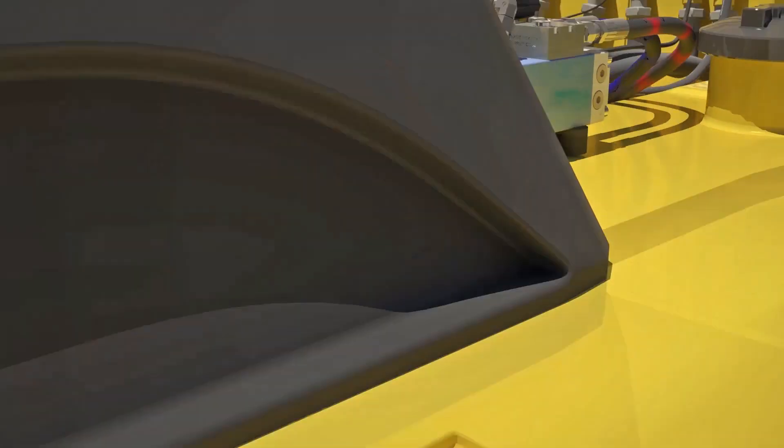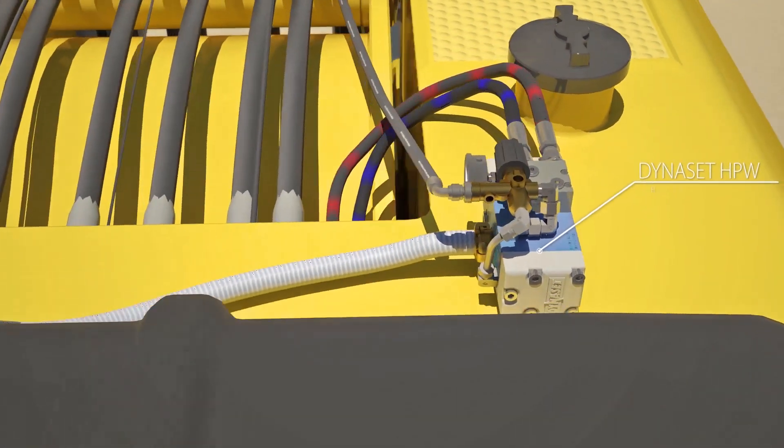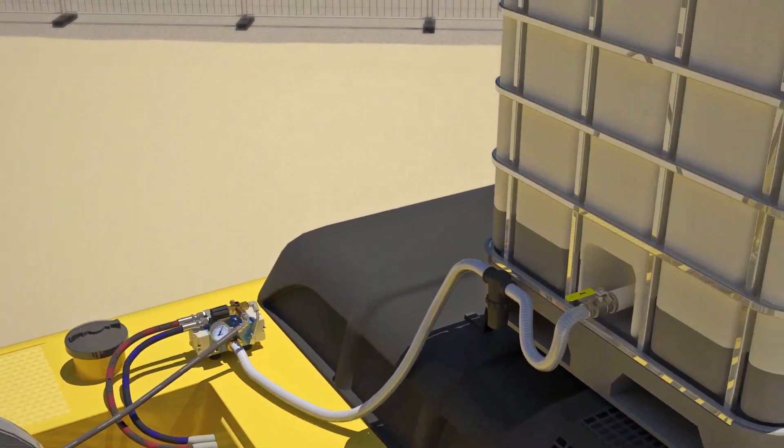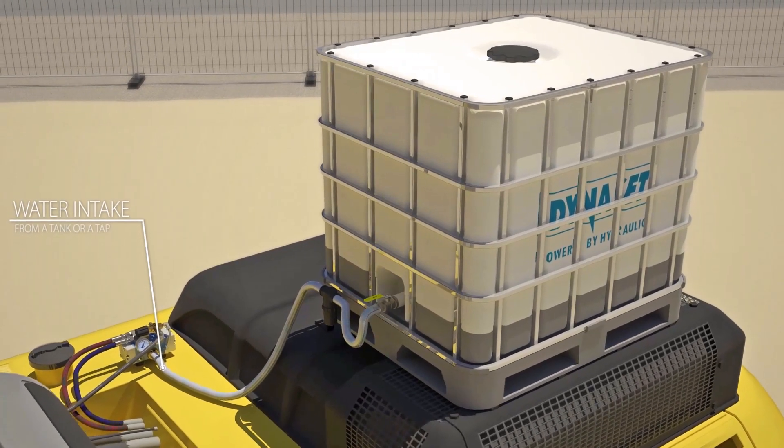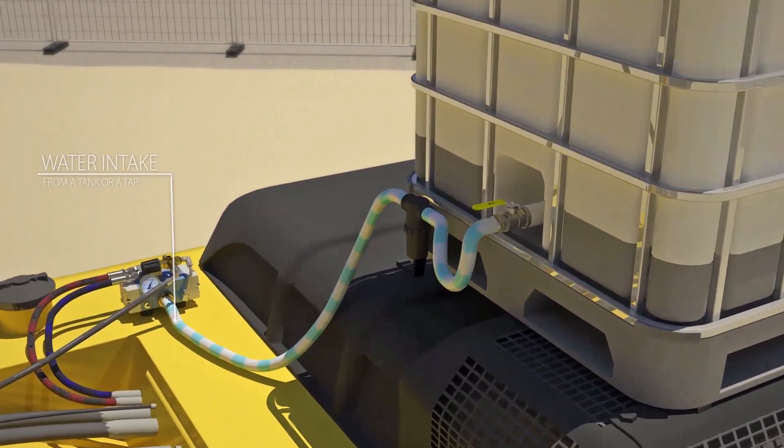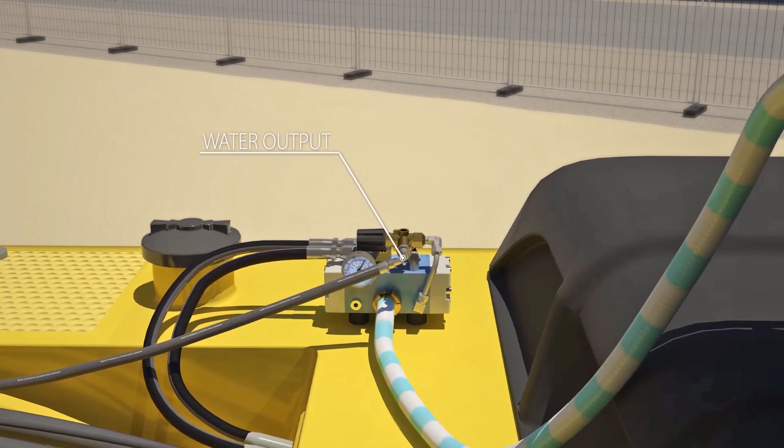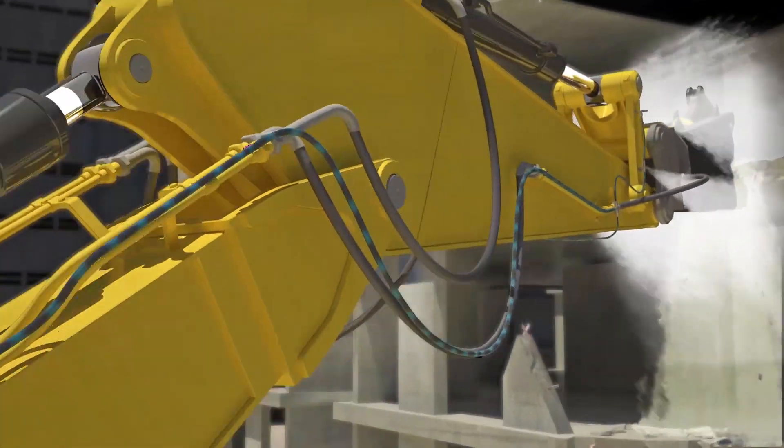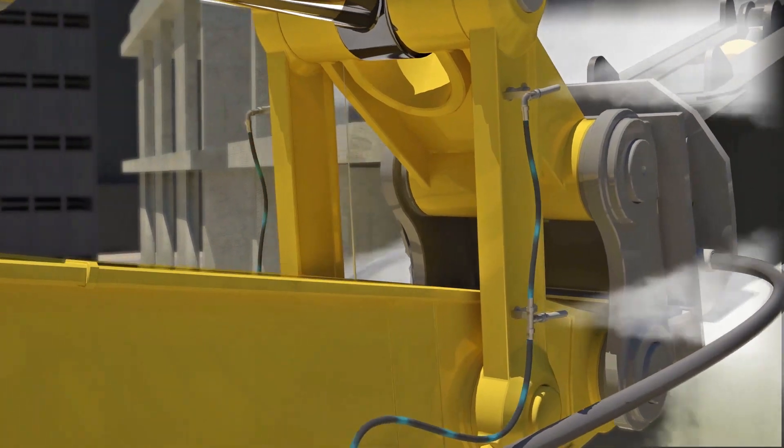The HBWDust system uses Dynaset's HBW high-pressure water pump which converts the hydraulic power into high-pressure water. The water for the HBW pump can be taken from a water tank or from a tap. The high-pressure water is pumped through the dust suppression nozzles which create the high-pressure water mist.